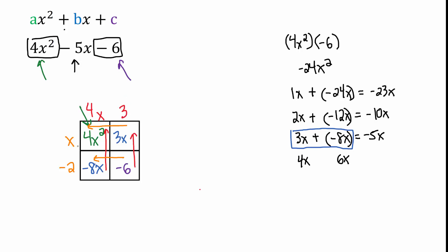And there you have our factors. We have x minus 2, that's one binomial factor. And then we have 4x plus 3, that's the other binomial factor.